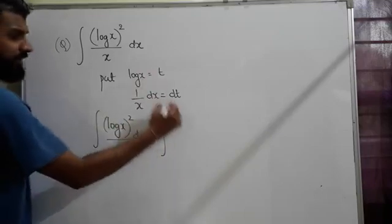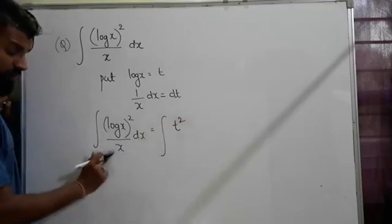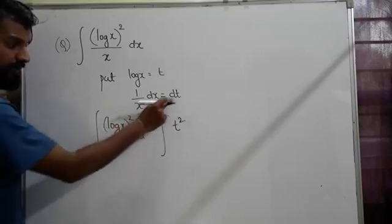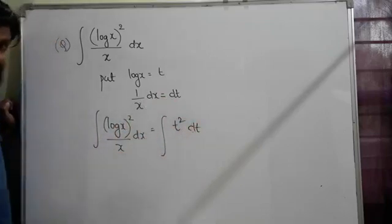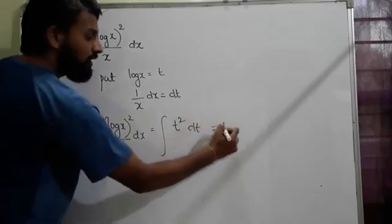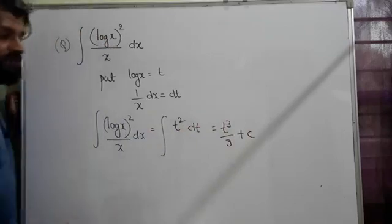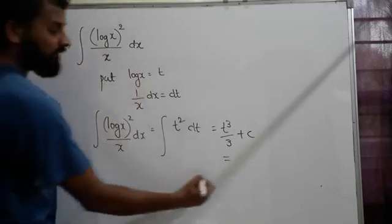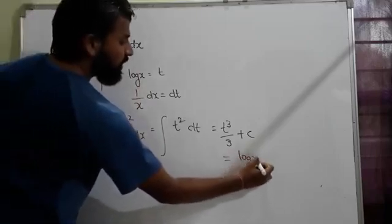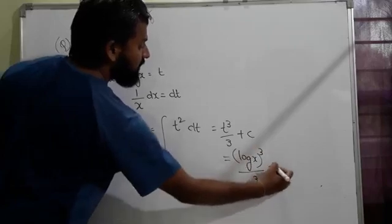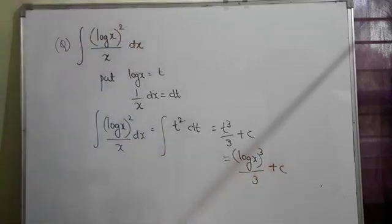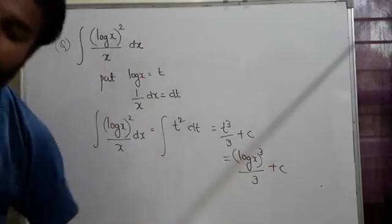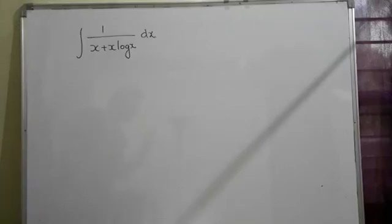Now see: integration (log x)²/x dx will become log x, which is t, so t². Here we have 1/x dx, which is dt. Integration of t² is t³/3 + c. In the last step, we replace t with log x, so this is (log x)³/3 + c. Easy, only when you know substitution.